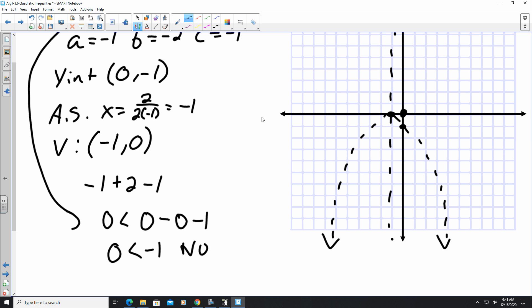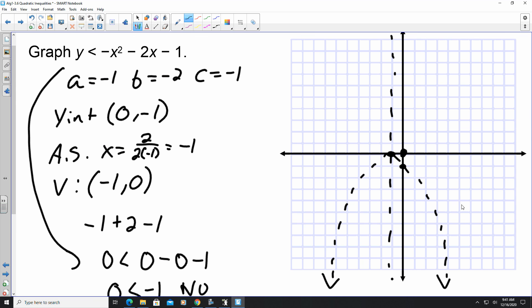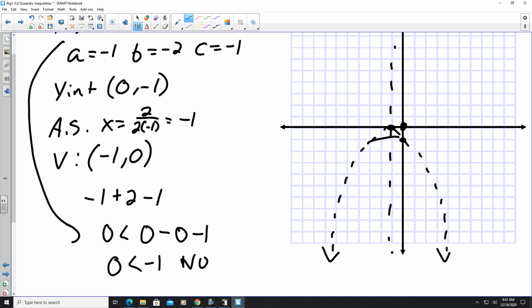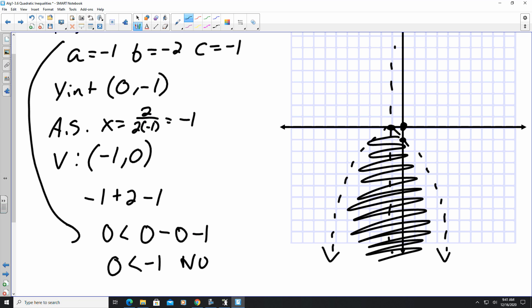So that means that I shade everywhere that is on the outside of my test point. So this is the shaded portion of my quadratic inequality.